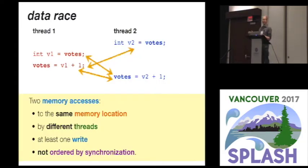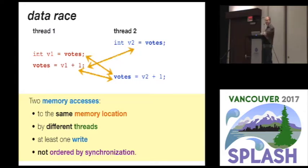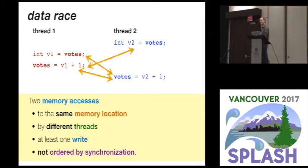To make sure we're all on the same page: in a shared memory multithreaded program, a data race is two memory accesses to the same memory location by different threads where at least one is writing and there's no synchronization between the two — they're not ordered by synchronization.